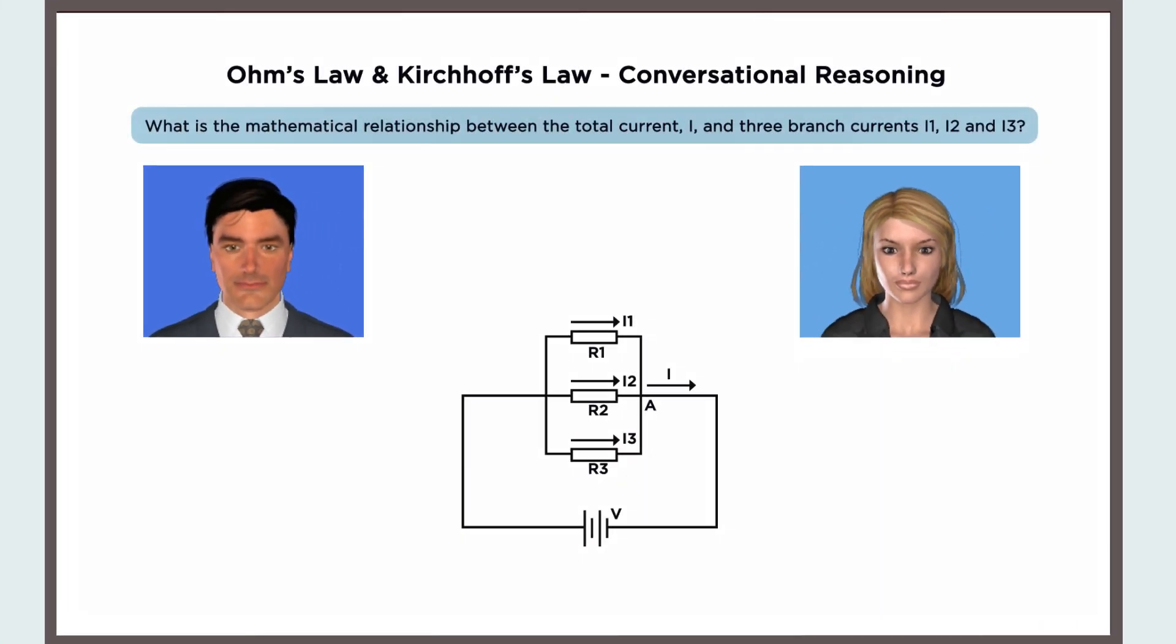Colin, for our next question, let's have a quick review question on currents and resistors. Ok. I remember something about an algebraic function for these. You're on the right track. In the diagram, I is the total current. I1, I2, and I3 are the currents through respective resistors. What is the mathematical relationship between the total current, I, and the three branch currents I1, I2, and I3?